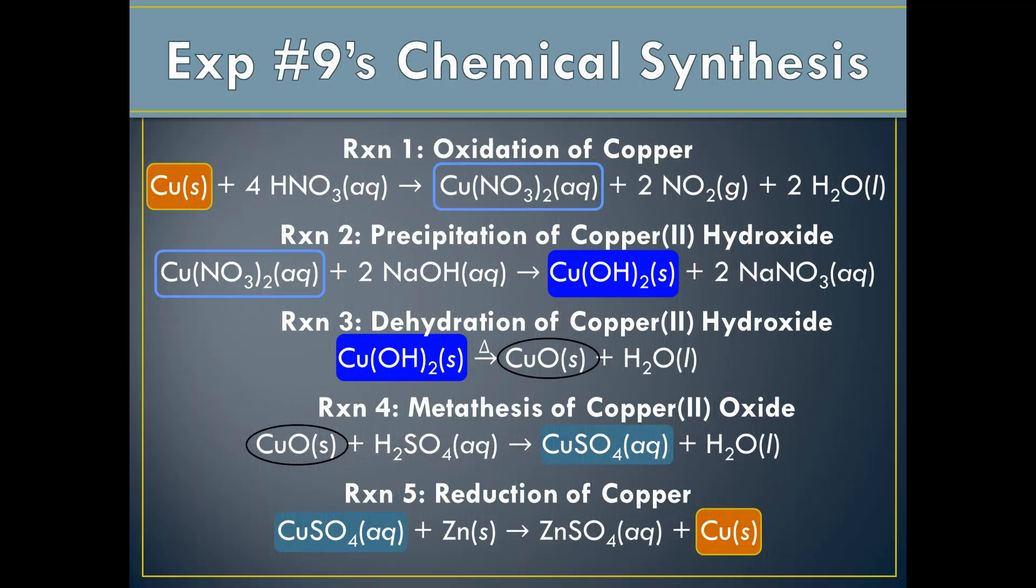Our chemical synthesis is unique in that it begins and ends with copper. In all, you'll take an original sample of copper through five different reactions, and after each reaction you'll have made a different copper compound.